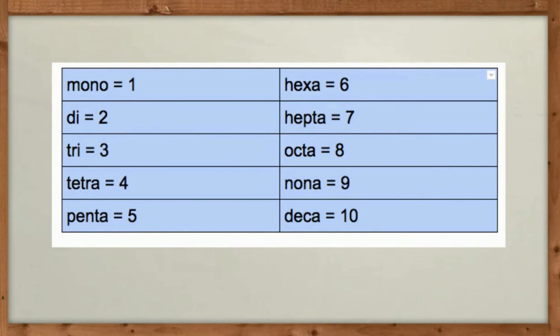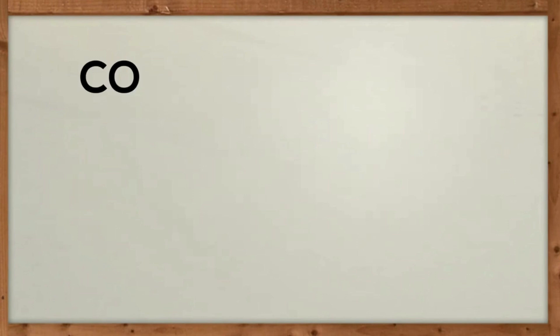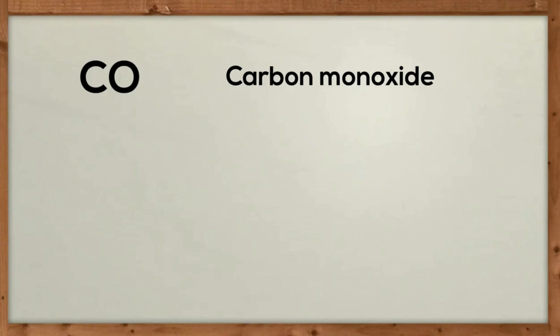Let's get started with a couple of formulas and go through some of the rules. Up first is CO. Rule number one: with the first element, if there is only one, you just say the element — you don't say monocarbon. For the second element you do add the prefix. So this will be carbon monoxide.